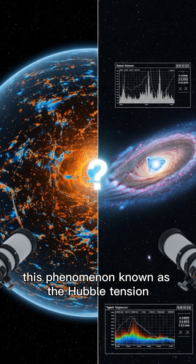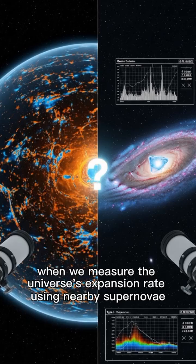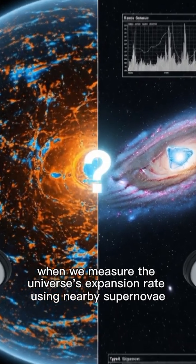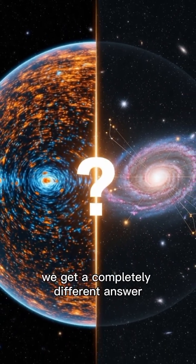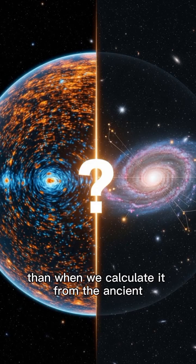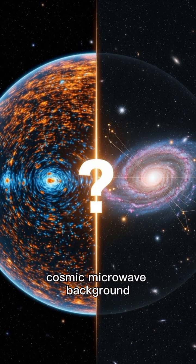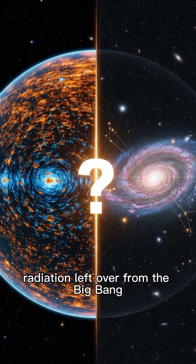This phenomenon, known as the Hubble tension, shows that when we measure the universe's expansion rate using nearby supernovae, we get a completely different answer than when we calculate it from the ancient cosmic microwave background radiation left over from the Big Bang.